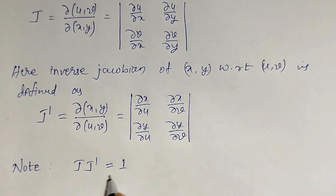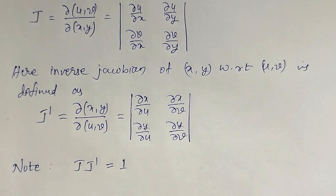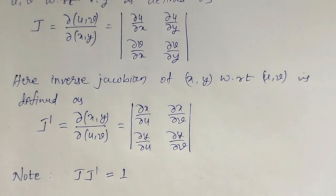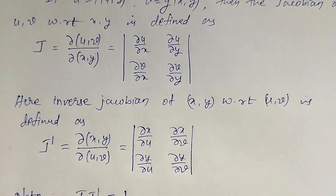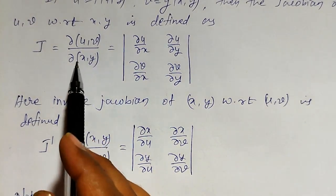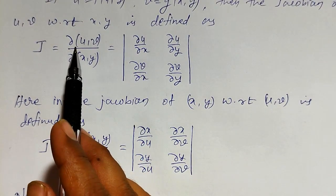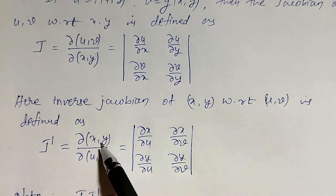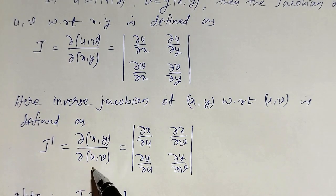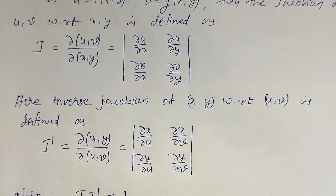Here I have defined the Jacobian for u, v with respect to x and y — two variables depending on two variables. Now let us extend to the case where three variables are depending on three variables.